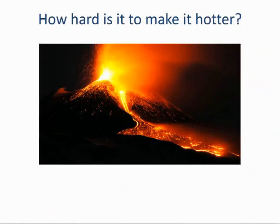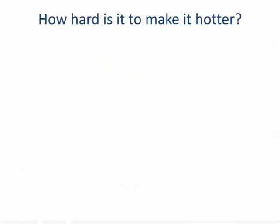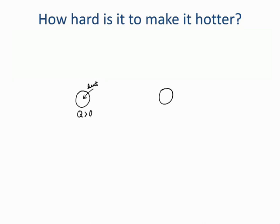Temperature is a measure of hotness. We're going to ask ourselves how hard it is to make something hotter, and how hard it is to make something colder. Imagine an object and its surroundings — the object could either gain heat or lose heat. Heat could be transferred from the surroundings to the object, in which case the sign of heat is positive, meaning heat is gained by the object.